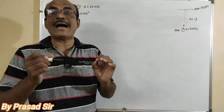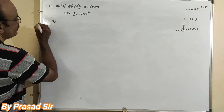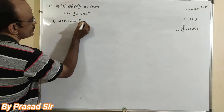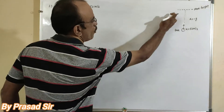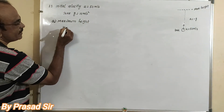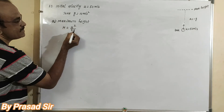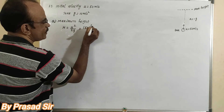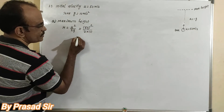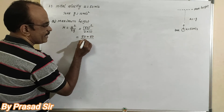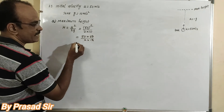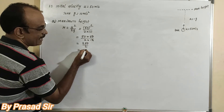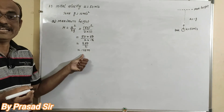First, we want to calculate the maximum height reached by the ball. The formula for maximum height is H equal to u squared divided by 2g. Substituting values: 50 squared divided by 2 into 10, that is 2500 divided by 20. After cancellation, 250 divided by 2 equals 125 meters. This is the maximum height reached by the ball.